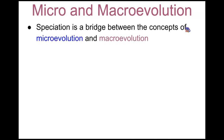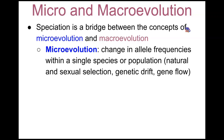Speciation ultimately is a bridge between the concepts of micro-evolution and macro-evolution. Micro-evolution is a change in allele frequencies within a single species or population, and we see this with natural and sexual selection, genetic drift, and gene flow.